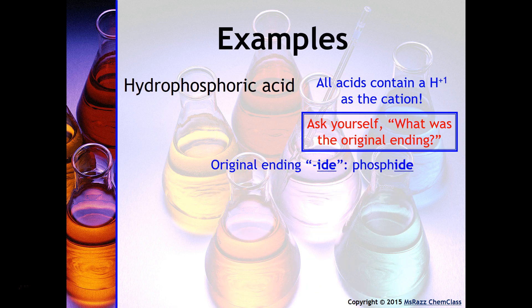Since we're dealing with 'hydrophosphoric,' notice there's 'hydro' in front and '-ic' at the end — that tells us the original ending was -ide, meaning we are talking about the phosphide anion. Therefore H is +1 and phosphorus is -3, so we need three hydrogens, giving us the formula H₃P.